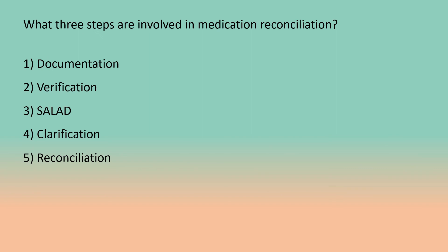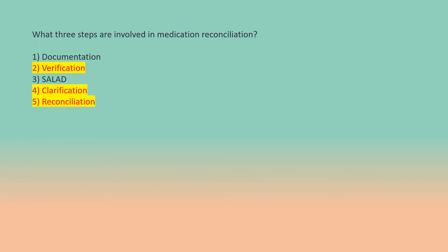What three steps are involved in medication reconciliation? 1. Documentation. 2. Verification. 3. (unclear). 4. Clarification. 5. Reconciliation. Answer: 2. Verification. 4. Clarification. 5. Reconciliation.